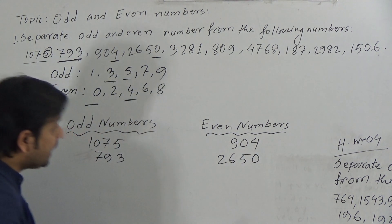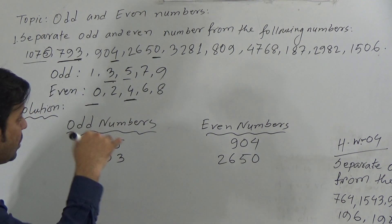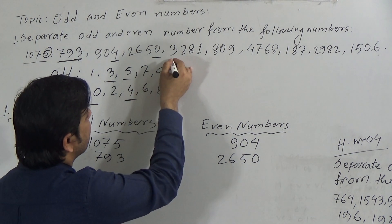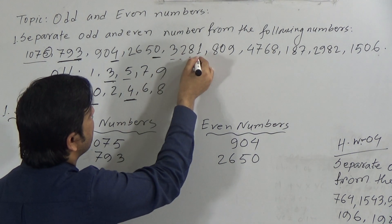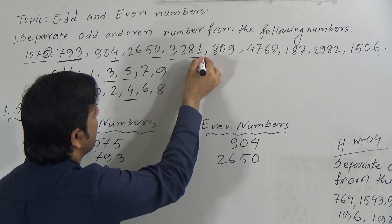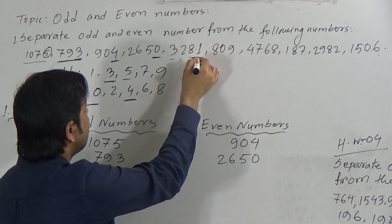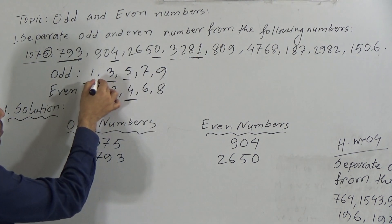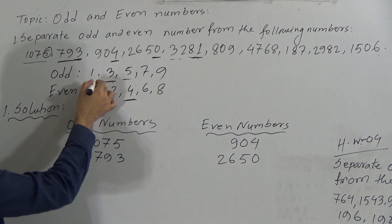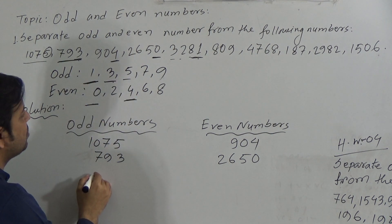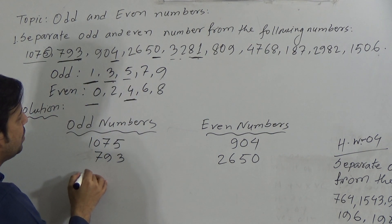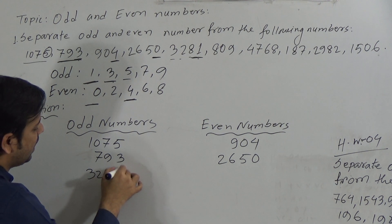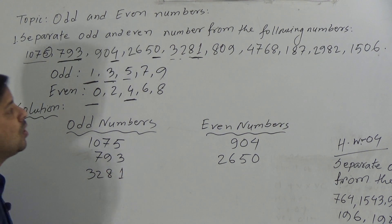Now the next number is 3281. Here the unit place is 1, and 1 is odd, so the number 3281 is odd.